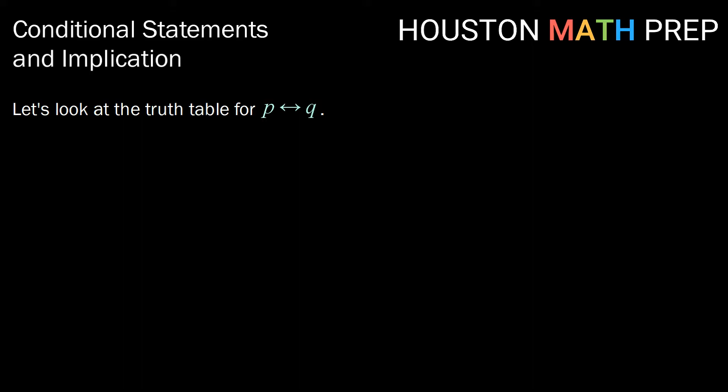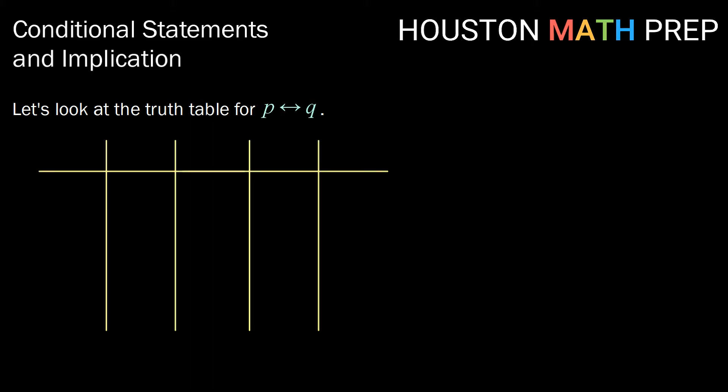So let's look at the truth table for our biconditional statement, P if and only if Q. We'll start with P and Q, then look at the conditional statement P implies Q, then Q implies P, and finally the biconditional statement.